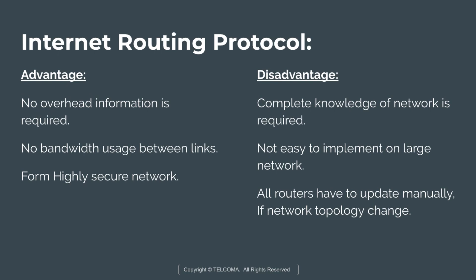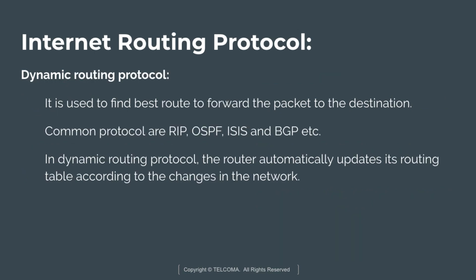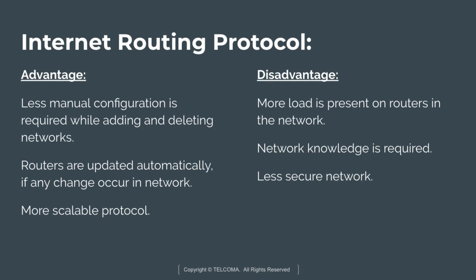The dynamic routing protocol is used to find the best route to forward the packet to the destination. The common protocols of dynamic routing include RIP, OSPF, ISIS, and BGP. In dynamic routing, routers automatically update their routing tables according to changes in the network.